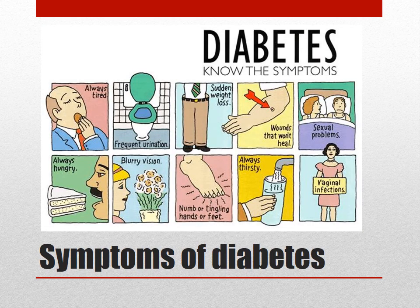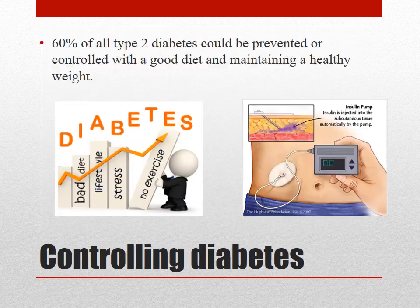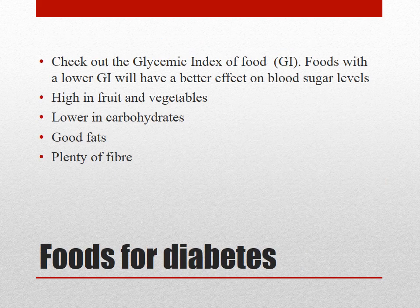A recap of symptoms associated with diabetes: the most notable are always being tired and hungry, frequent urination and always being thirsty. Importantly, 60% of all Type 2 diabetes could actually be prevented or controlled with a good diet and maintaining a healthy weight, so people diagnosed with diabetes can make changes and avoid insulin injections. You can see in the picture an insulin pump - these are connected to the body and are mostly used by people with Type 1 diabetes, and you'll often see children with these attached to themselves. Being aware of the glycemic index of foods is really important - foods with a lower glycemic index have a better effect on blood sugar levels. Glycemic index measures how quickly sugar enters your bloodstream.